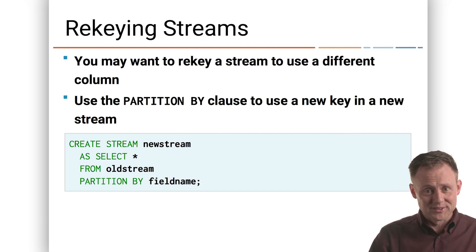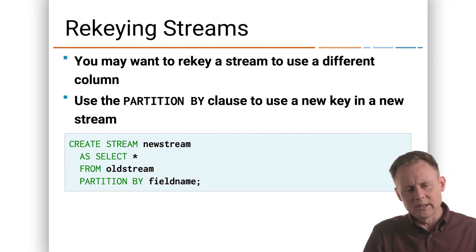We're just selecting from the old stream and saying, well, partition by this field, create a new stream called that. And now this is a persistent query. That's always running. Anytime records arrive at old stream, they will be produced into new stream.